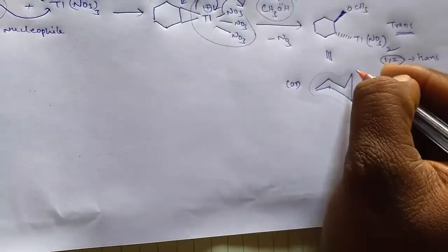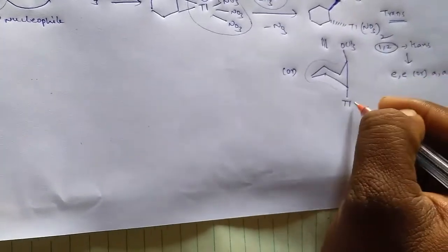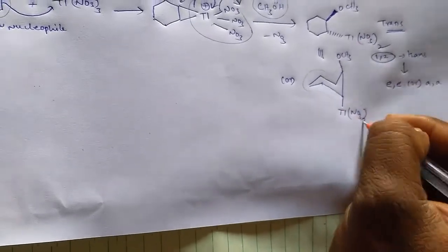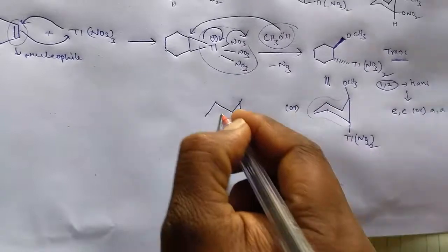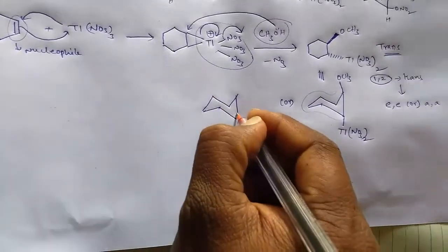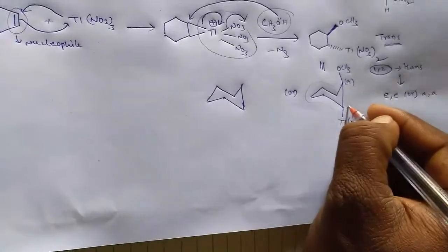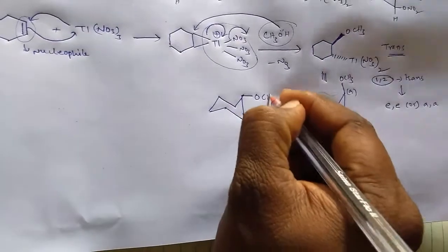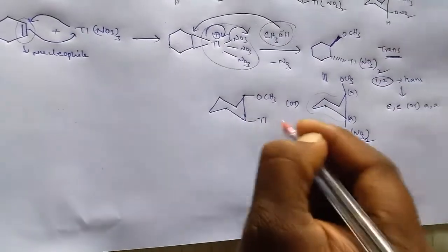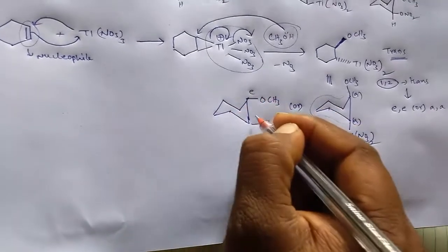Next, one is OCH3 and thallium nitrate axial-axial, and another one is OCH3 and thallium nitrate equatorial-equatorial.